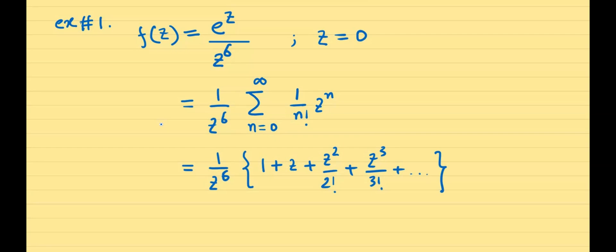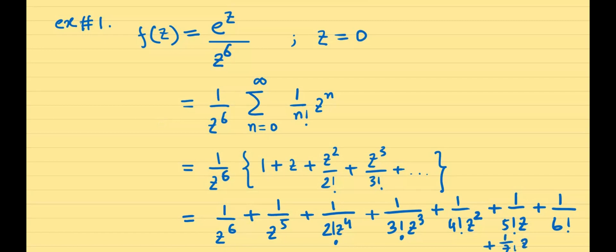You understand that if we bring the 1 over z to the power 6, we have 1 over z to the power 6, plus 1 over z to the power 5, plus 1 over 2 factorial z to the power 4, plus 1 over 3 factorial z cubed, plus 1 over 4 factorial z squared, plus 1 over 5 factorial z, plus 1 over 6 factorial, plus 1 over 7 factorial z, plus and so on. So this is the desired Laurent expansion about z equal to 0.